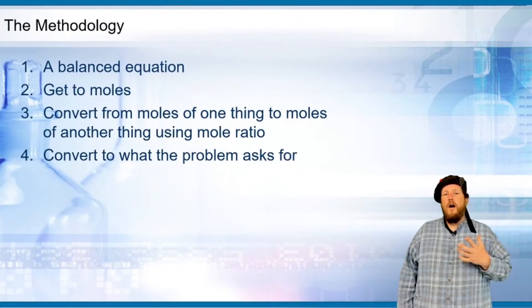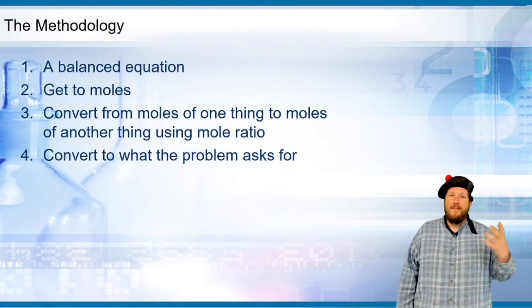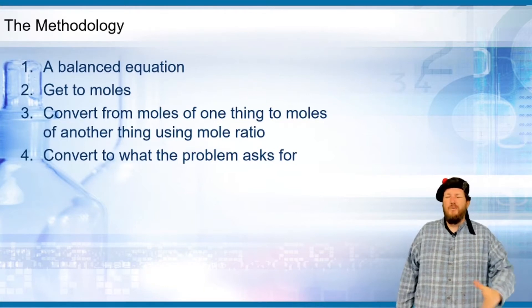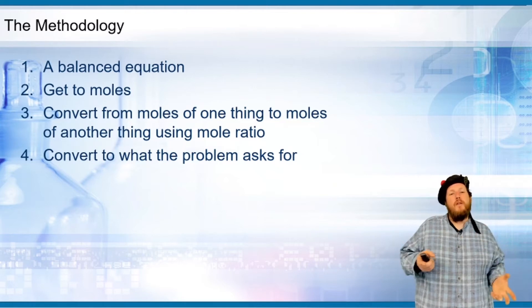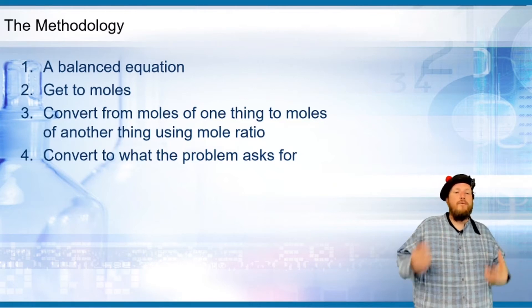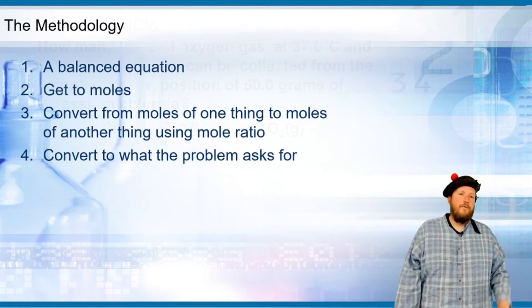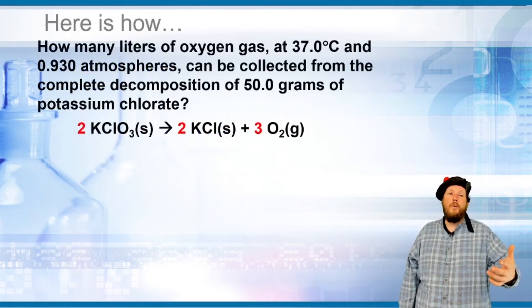The summary is: balanced equation, get to moles - whatever you have to do, just get to moles. Then convert from moles of one thing to moles of another using the mole ratio, and finally convert to what the problem asks for. Let's look at an example.